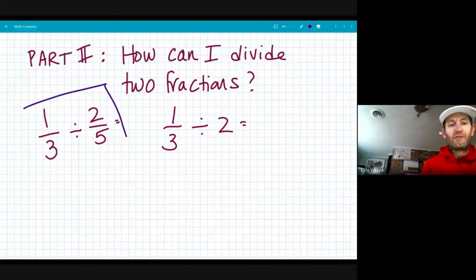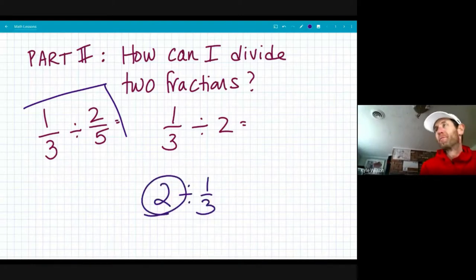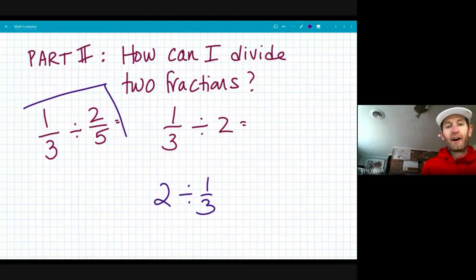So that first number is still going to be our dividend. One third is going to be the number that we're dividing up. Or in this problem, we have 2 divided by one third, and 2 is the number that we'll be dividing up. And our divisors would be 2 or one third.